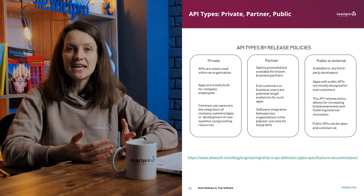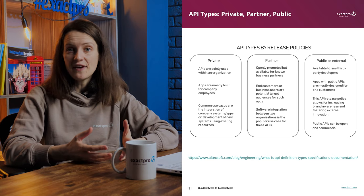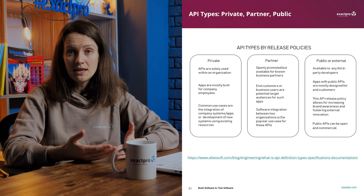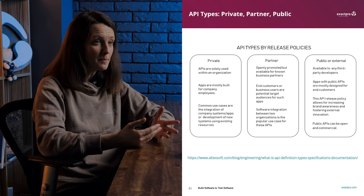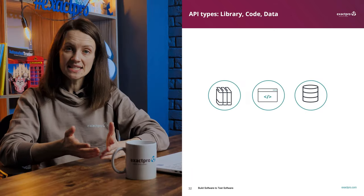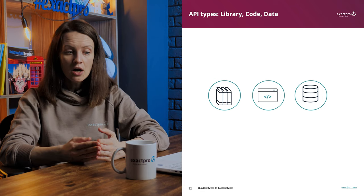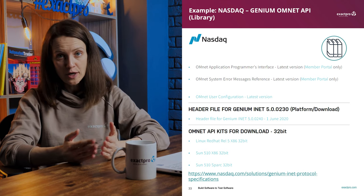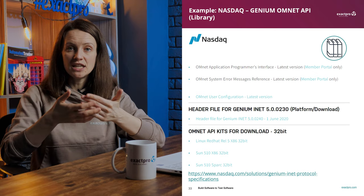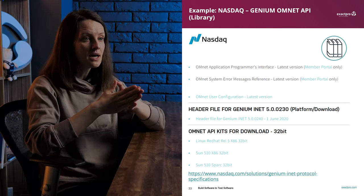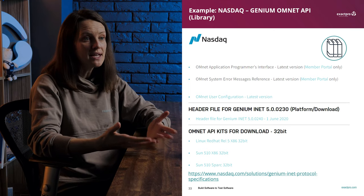Getting back to APIs, the three Ps here stand for private, partner, and public. There are interfaces only used internally — private — those used between partners, and public interfaces that can be used by external developers. The next typology is LCD: library, code, and data. In financial services and other sectors, the owner of the interface often requires the use of a library you need to install and link to — here's an example at NASDAQ using the Genium OMNET API. The opposite approach uses a network protocol with a described data format, giving you no development language limitations. An example is the FIX protocol, used by most exchanges and brokers around the world.